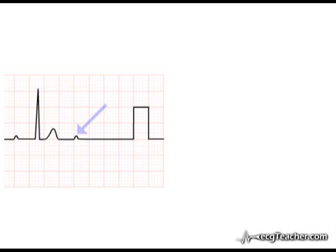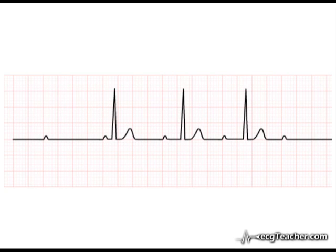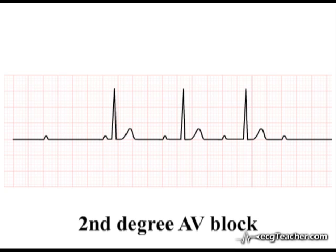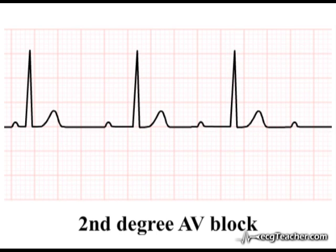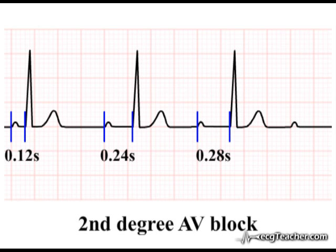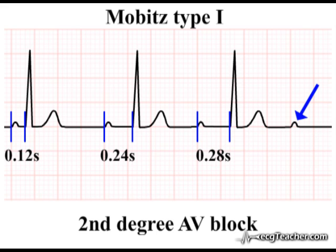With periodic failure of P-wave transmission to the ventricular myocardium, this is a case of second degree atrioventricular block. Analyzing the relationship between the P-waves and the QRS complexes, we find a progressive prolongation of the PR interval within the group until finally a P-wave fails to be transmitted to the ventricular myocardium. This progressive prolongation of the PR interval preceding a non-transmitted P-wave is the defining characteristic of Mobitz type 1 second degree AV block.